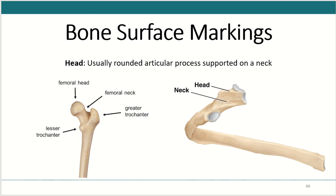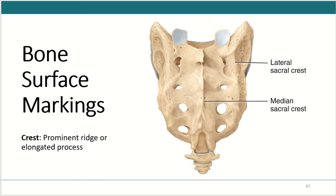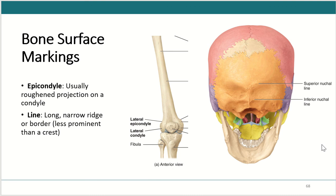Next we have the head — usually a rounded articular process supported on a neck, such as the head of a rib and its neck, and very apparent in the femur with the femoral head and femoral neck. Next is the crest — a prominent ridge or elongated process, such as the medial sacral crest. And the epicondyle is a rough projection on a condyle, which is a great place for ligament attachment.